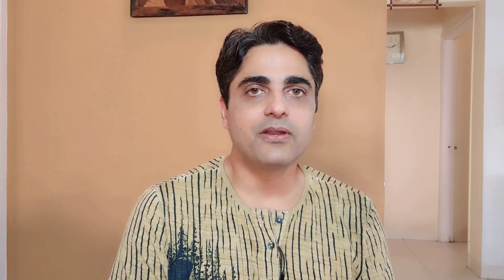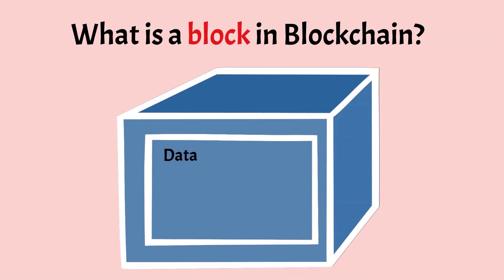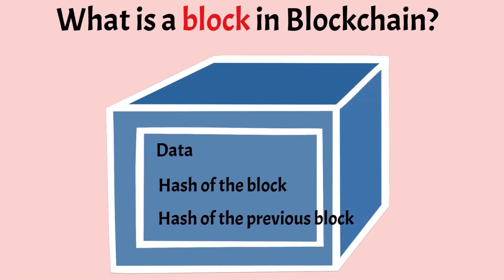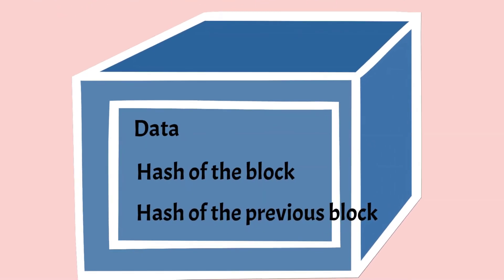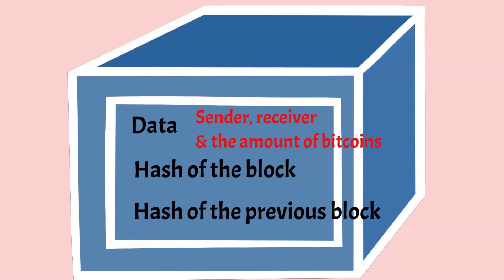Now let us try to understand what is a block in blockchain. A block contains three things: data, the hash of the block, and the hash of the previous block. The data stored in a block depends on the type of blockchain. For example, in the Bitcoin blockchain, the data stored in the blocks is the transaction data, such as sender, receiver, and the amount of bitcoins being transferred.